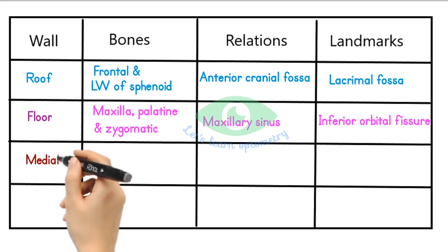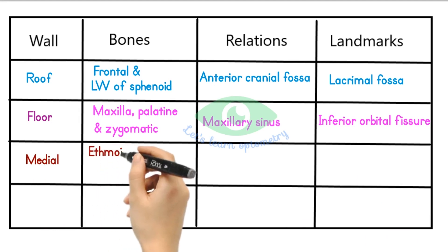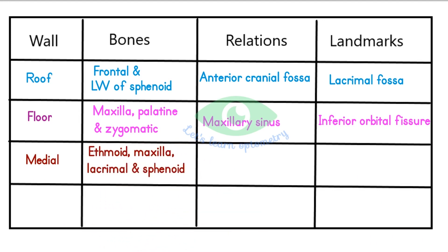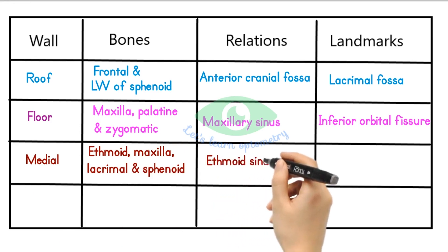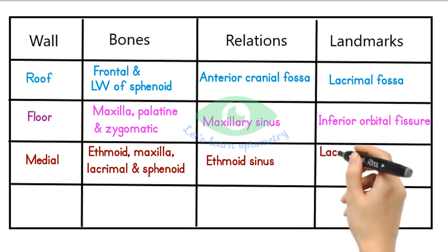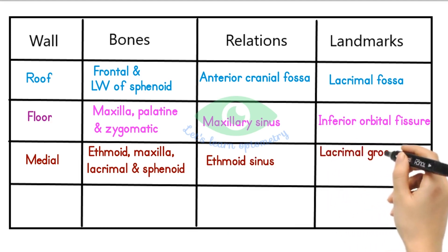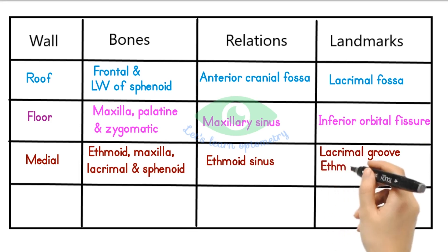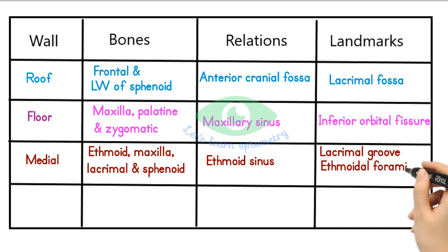The medial wall is made up of the ethmoid, maxilla, lacrimal and the sphenoid bones. The ethmoid bone separates the orbit from the ethmoid sinus. The lacrimal bone and the frontal process of the maxilla form the lacrimal groove, which contains the lacrimal sac. Besides the lacrimal groove, important landmarks are the anterior and posterior ethmoidal foramina formed between the greater and the lesser wing of the sphenoid bone.